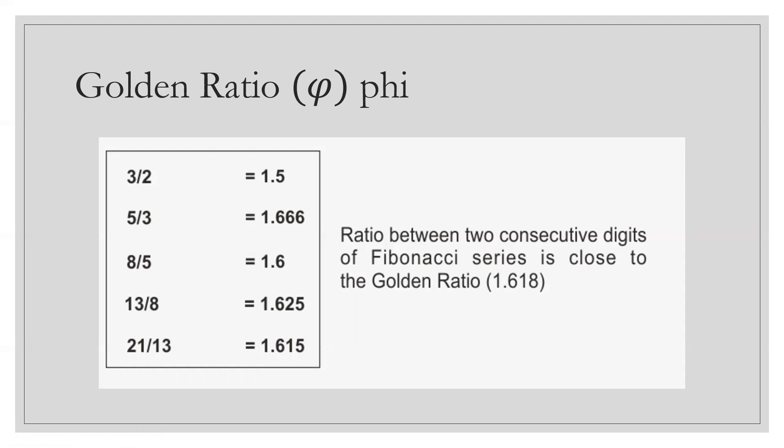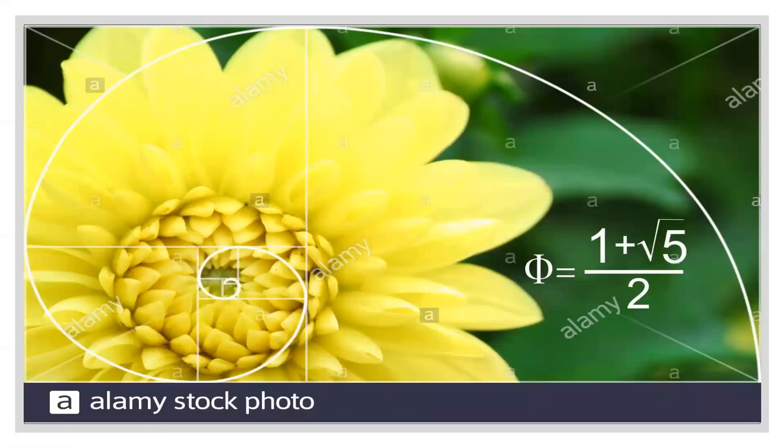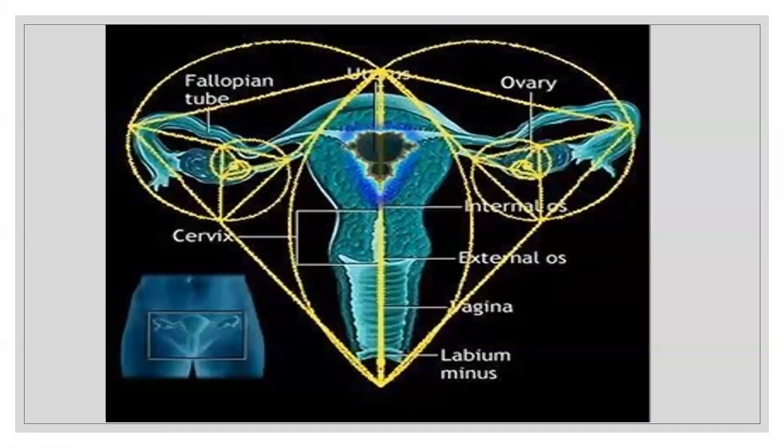Just like the Fibonacci sequence, the golden ratio is also present in nature. Just like this flower. This is the illustration: this is the Fibonacci sequence and this is the golden ratio. When you compute this, it equals 1.61. And this one is another example.